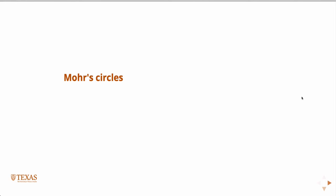Last time we were talking about Mohr circles. We ended the class with an example where, if you have a bar and you pull on it in an unconfined way so that's the first principal stress sigma one, the material will often fail at some angle of inclination. The angle between the normal of that fault and sigma one is beta. We showed how, if you rotated the stress, the shear stress was actually a maximum when beta was equal to 45 — suggesting that the maximum shear stress is a failure criterion.